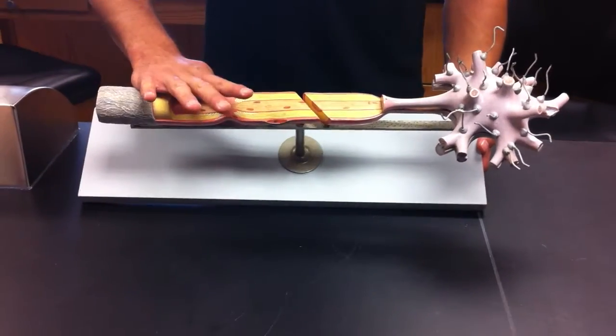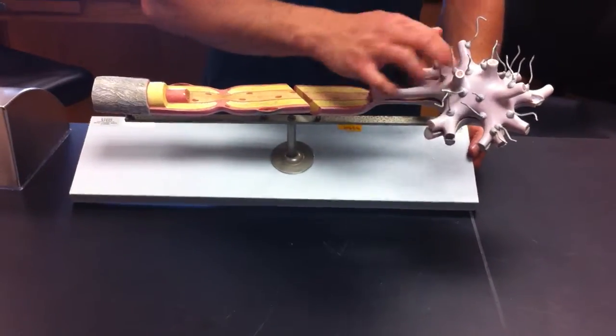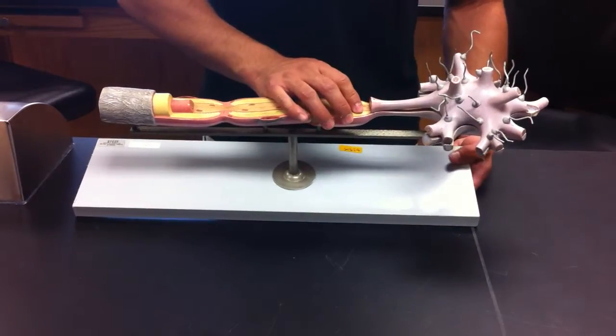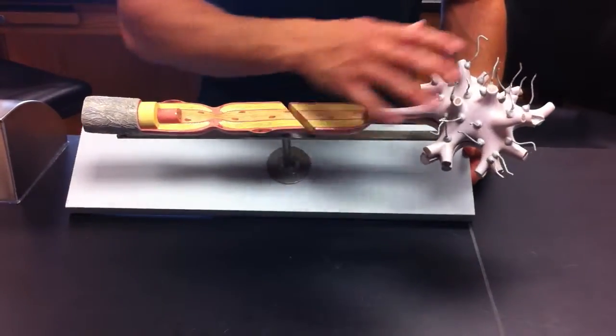We're going to be going over the neuron. We'll start up here in the cell body. Some other features you can see on the cell body here.